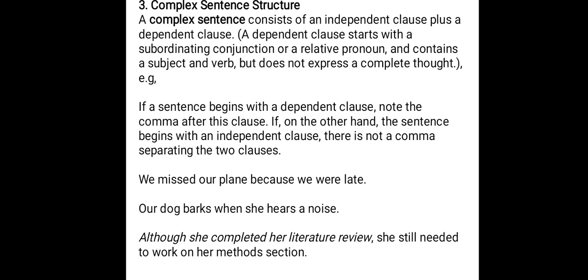'Our dog barks when she hears a noise.' Here 'our dog barks' is the independent clause and 'when she hears a noise' is the dependent clause. A dependent clause will start with a subordinating conjunction such as 'although', or with a relative pronoun such as 'whose', 'whom', 'which', etc.